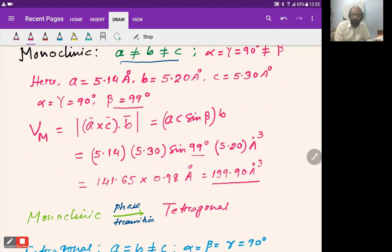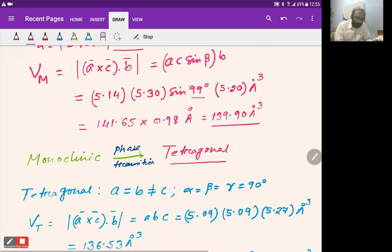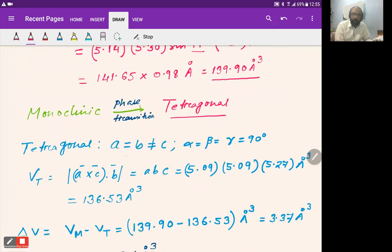Now it undergoes a phase transition and becomes tetragonal. For tetragonal structure, lattice parameters a and b are equal but not equal to c, and all angles α, β, and γ are 90°. Therefore, the volume of tetragonal structure can be written as a·b·c.